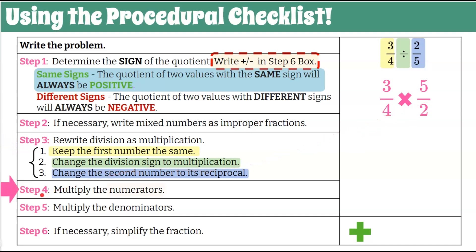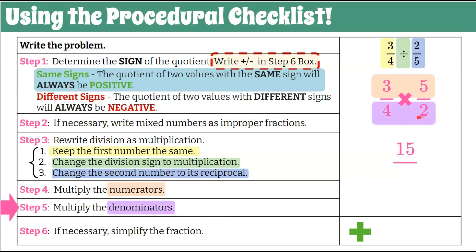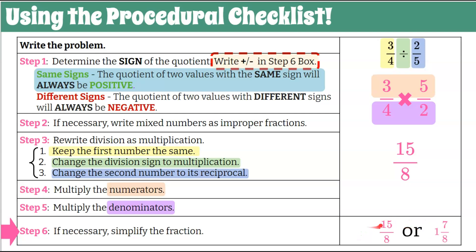Step four: multiply the numerators. Three multiplied by five is 15. Step five: multiply the denominators. Four times two is eight. Step six: simplify if necessary. Eight only has factors of two and there are no factors of two in 15, so this is in simplest form. We know the quotient is positive. We can write this as a mixed number: eight goes into 15 once with seven left over, so 15-eighths or one and seven-eighths.